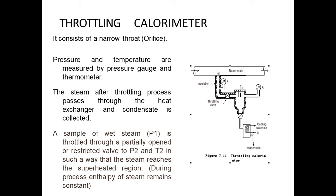We have seen this in the first unit when we studied the steady flow energy equations, or the first law energy equation for steady flow processes. The throttling process is an isenthalpic process — enthalpy before throttling equals enthalpy after throttling. It remains constant because we are not doing any work, there is no heat supply or rejection, and kinetic and potential energy changes are negligible. Only the pressure changes, and the internal energy may vary, but enthalpy remains the same.